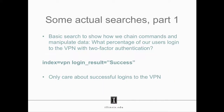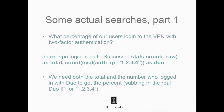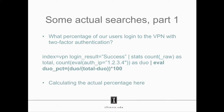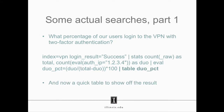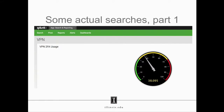You can do some really cool stuff with that. Here's an actual search we put on a dashboard: what percentage of our users log in to the VPN with two-factor auth? First we filtered to the VPN index and looked only at successful logins. Then we did a stats function to count the number of lines and label that as 'total,' and count the number that hit the Duo server — that's not the real Duo server IP, obviously — and label that 'Duo.' Then we just calculate the percentage and make a nice table.